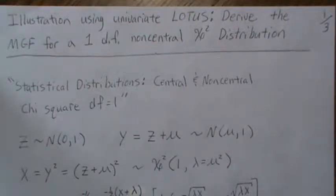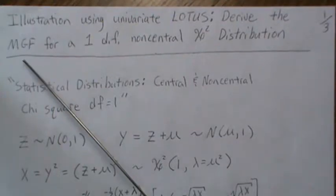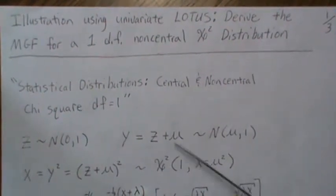Hello, in this video we're going to do two things. One, we're going to derive the moment generating function for a one degree of freedom non-central chi-square distribution.